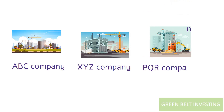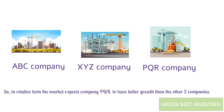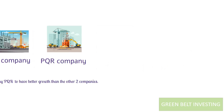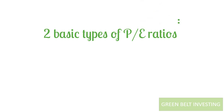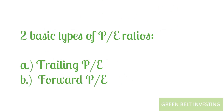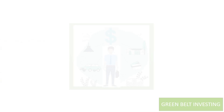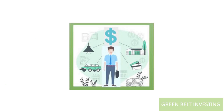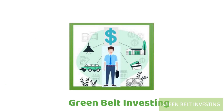There are two basic types of P/E ratios — one is called trailing P/E and the other is called forward P/E — but we will discuss these in our upcoming videos. If you liked our video, please do like, share, and subscribe to our channel. Thank you.